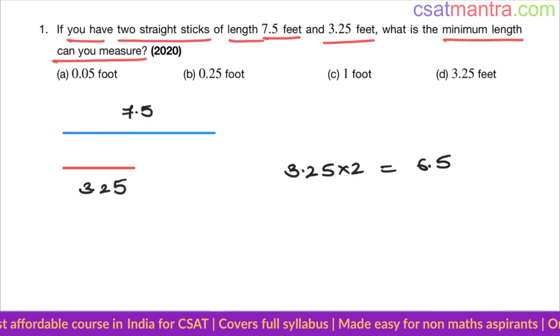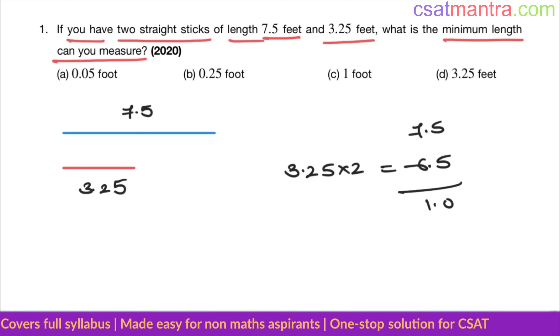Okay, 7.5 minus 6.5, that is one foot. So this cannot be the minimum length we can measure. We are able to measure one foot, so option d eliminated.